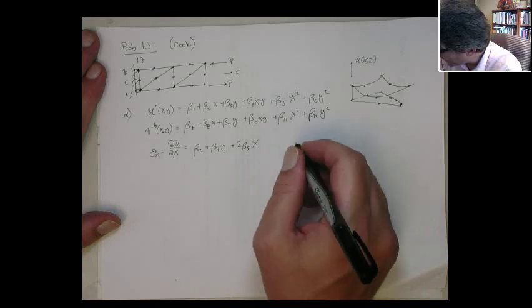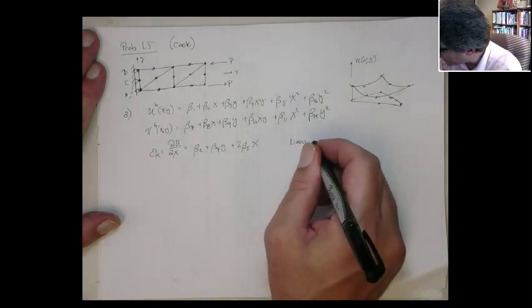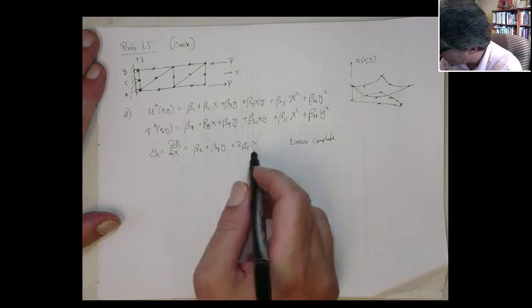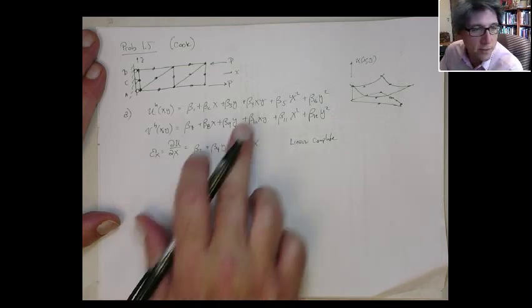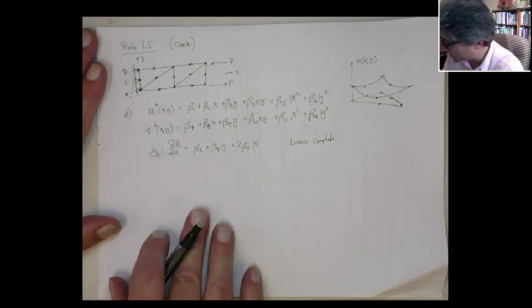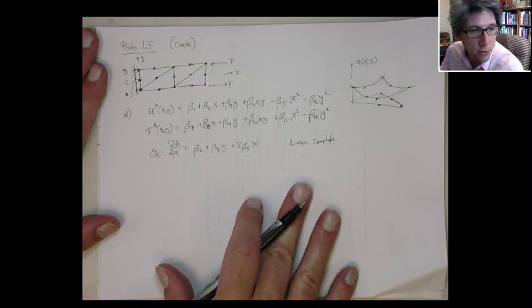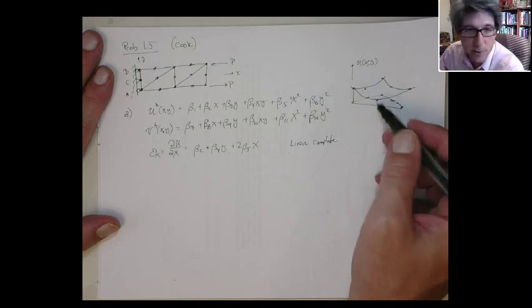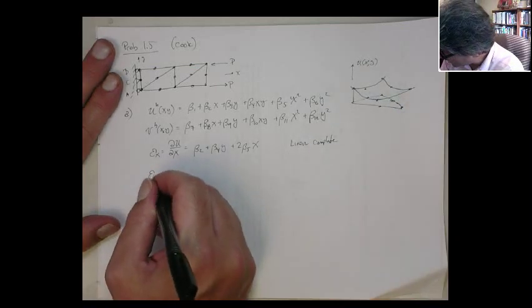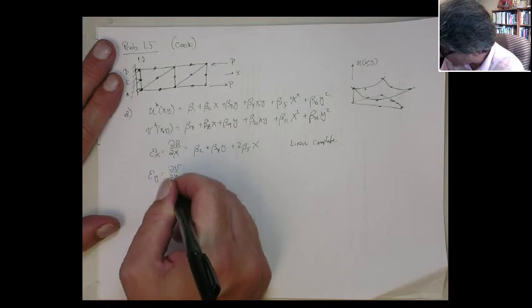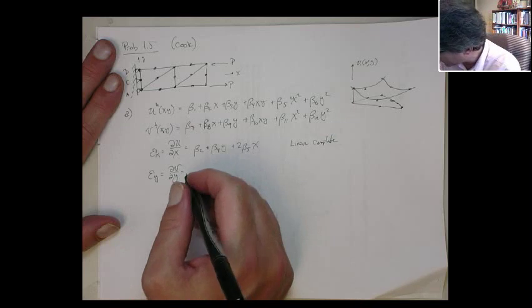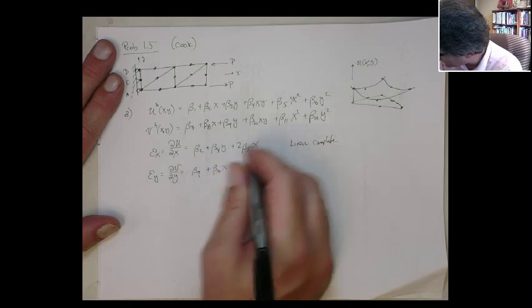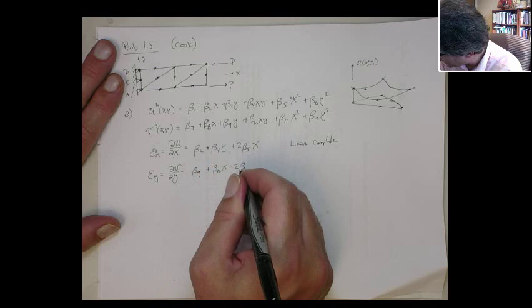So you can see the strain is linearly complete. We call it complete because it has the constant, the x term, and then the y term. If we're missing one of these, it wouldn't be complete. But it has, so this means it can reproduce any linear polynomial in strain. In fact, this allows the strain to be reproduced as a plane.